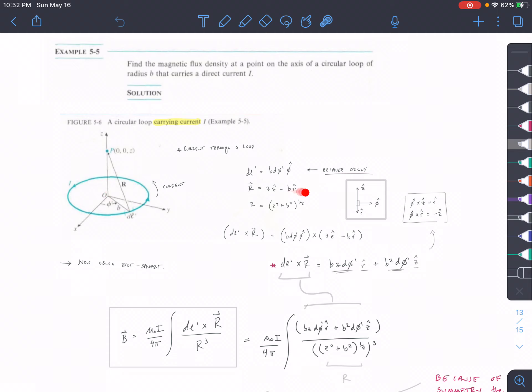Then the magnitude of R is the square root of all the components squared, so Z-squared plus negative B-squared to the one-half. So just Pythagorean theorem, essentially.